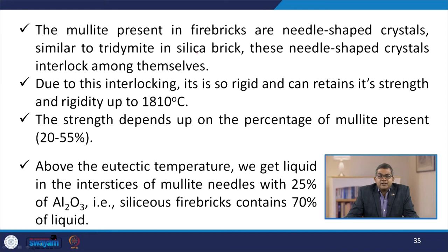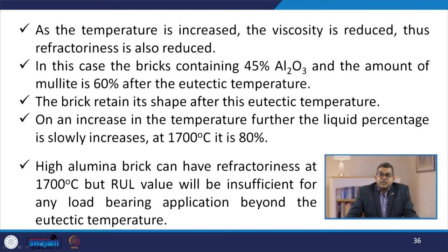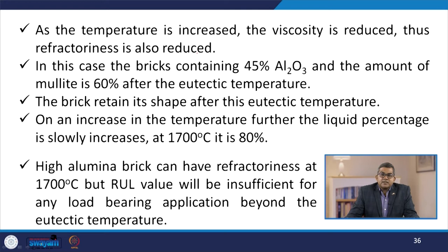The strength depends on the percentage of mullite present — 20 to 55%. Above the eutectic temperature, we get liquid in the interstices with mullite needles; with 25% Al2O3, siliceous fire bricks contain 70% liquid. As temperature increases, viscosity reduces and refractoriness is also reduced. Bricks containing 45% Al2O3 contain 60% mullite after the eutectic temperature and retain shape. With further temperature increase, liquid percentage slowly rises — at around 1700°C it is about 80%. High alumina bricks can have refractoriness at 1700°C, but RUL value will be insufficient for any load-bearing application beyond eutectic temperature.